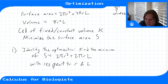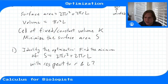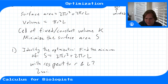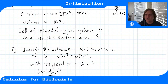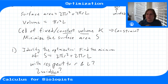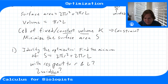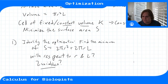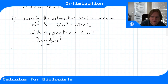Since we have two variables, we look at our constraint: the volume is constant. We use that constraint to reduce the number of variables from two down to one — essentially eliminating a variable so we have a single-variable optimization problem.